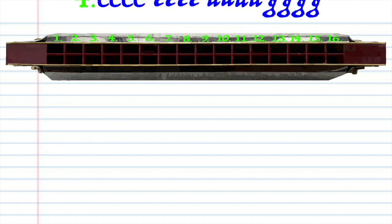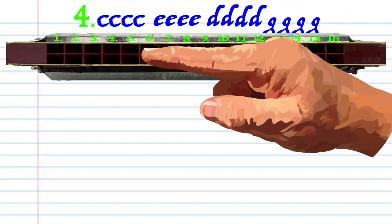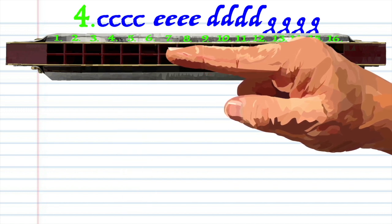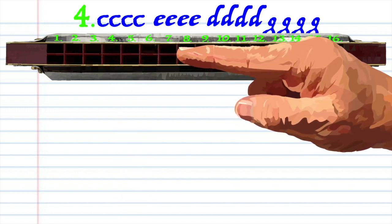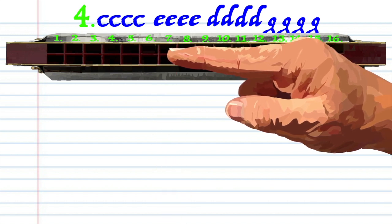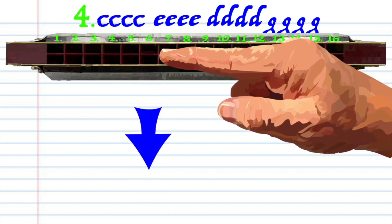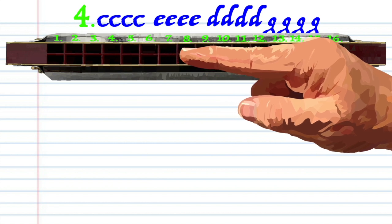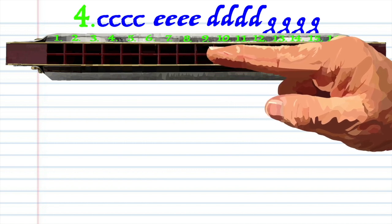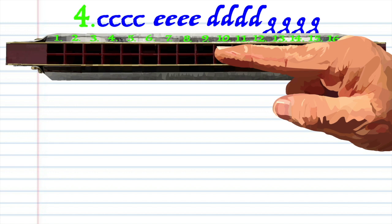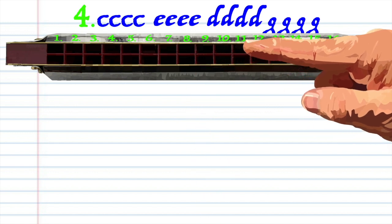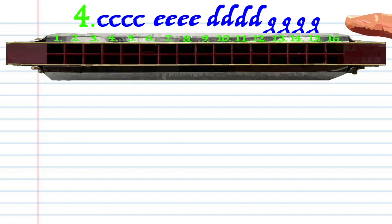For phrase 4, blow into 5 four times, blow into 7 four times, breathe in through 6 four times, and blow into 9 four times. Practice this until you end up with something that sounds like this.